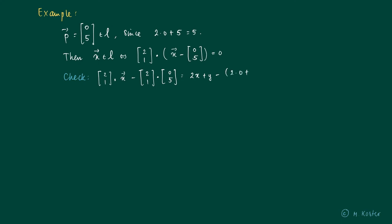Minus 2 times 0 plus 5 times 1 equals 2x plus y minus 5, which is 0 of course.